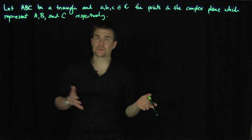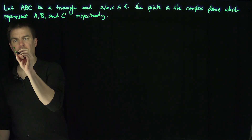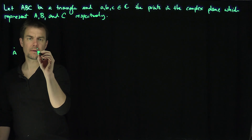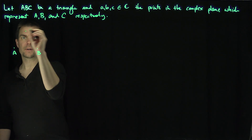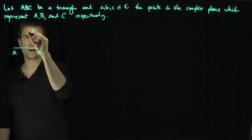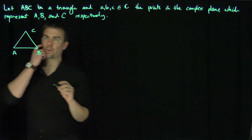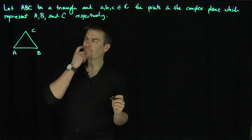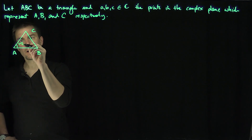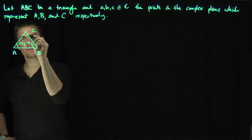We are very used to studying equilateral triangles — they're nice and beautiful. Here's point A, point B, and point C, drawn so that ABC is an equilateral triangle. All of the angles are π/3; π/3 plays a special role in the study of equilateral triangles.